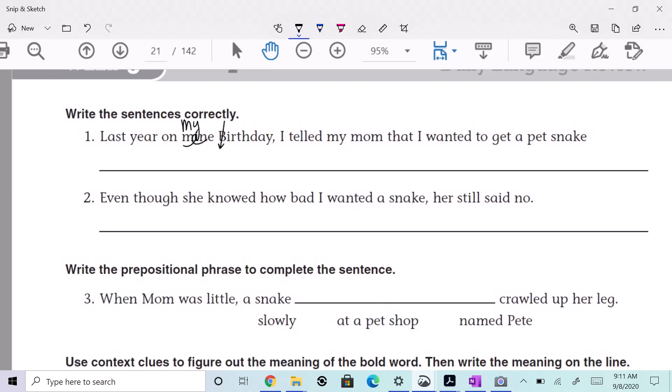my birthday, I told my mom that I wanted to get a pet snake. Would you say 'I told my mom'? What should that be, everybody? I told. Yes, I told my mom that I wanted to get a pet snake. You know what, we're missing something very important. Yes, we need a period. I'm very proud of you. So we've got how many mistakes, is that